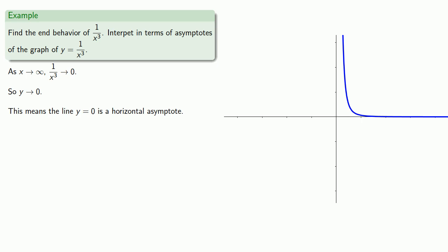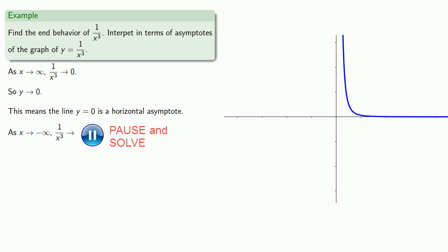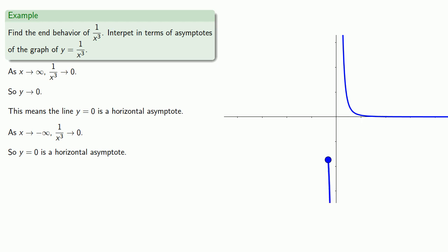What happens in the other direction? As x goes to minus infinity, 1 over x cubed goes to 0. So again, y equals 0 is a horizontal asymptote. And so, if we follow our graph to the far left, our y coordinates will approach 0 and our graph will approach the line y equals 0.